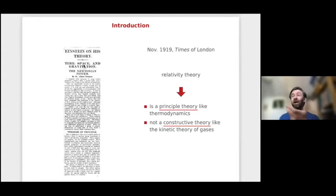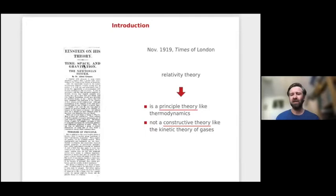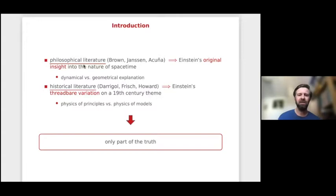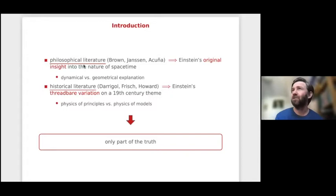In 1919 Einstein wrote a very short article for the Times of London in which he introduced a famous distinction between two types of theory. He claimed that relativity theory is a principle theory, like thermodynamics, and not a constructive theory, like the kinetic theory of gases. This paper was nearly forgotten for many decades but has attracted a lot of attention since around 2005, when Harvey Brown, Michel Janssen, and Paul Acuña, among others in philosophy of physics, considered it as Einstein's original insight into the nature of space-time.